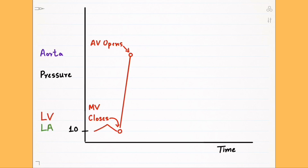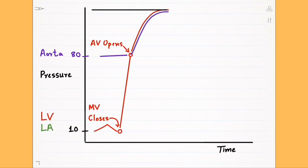The lowest aortic pressure is 80 millimeters of mercury on average, so the aortic pressure curve should start higher up. Right after opening of the aortic valve, the left ventricle pumps blood into the aorta, so the pressure inside the aorta increases accordingly, reaching up to 120 millimeters of mercury.